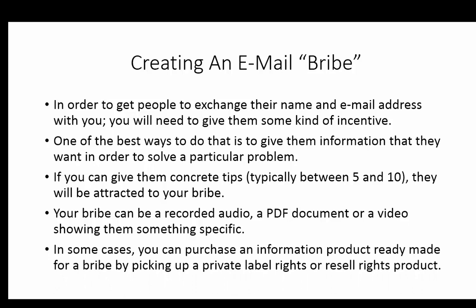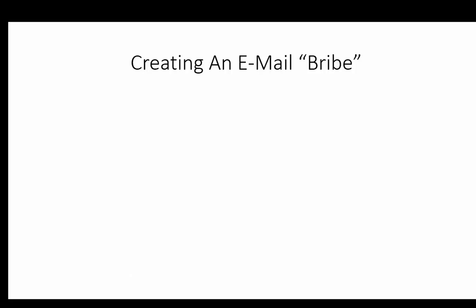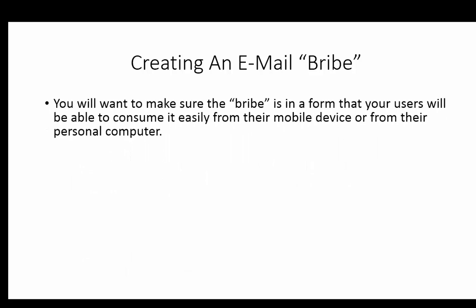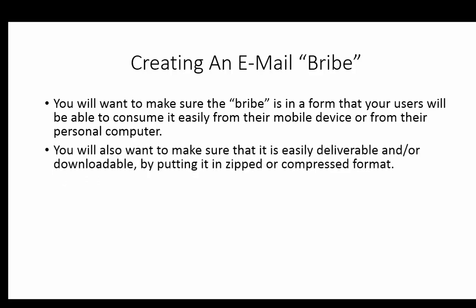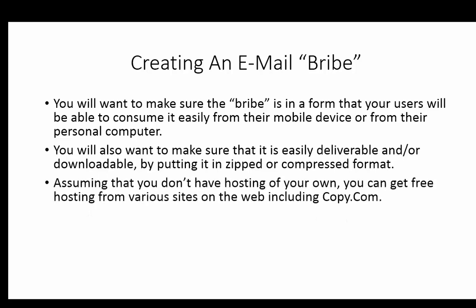In some cases you can purchase a ready-made information product for a bribe by picking up private label rights or resale rights products. You'll also want to make sure the bribe comes in a form your users can easily consume from their mobile device or personal computer. You want to give them a sense of immediate satisfaction — something they can consume as soon as they put their name and email address into your form. Make sure it's easily deliverable and downloadable, and you'll need to put it inside a zipped or compressed format.